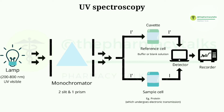Reference cell and sample cell are made of cuvette. Reference cell contains a buffer or blank solution so that the light passes through it without any absorbance, with the same intensity. The sample cell contains the sample, which can be any protein. When this light emitted from the monochromator passes through the sample cell, some portion of light is absorbed. The intensity from the sample and reference cell is detected by the detector, and the recorder provides the result in the form of a graph.